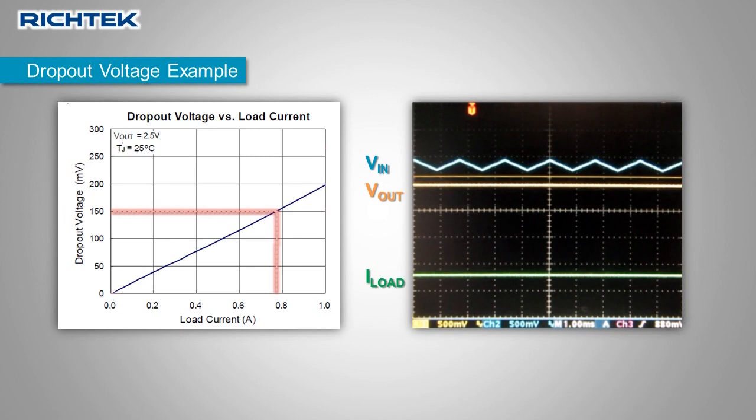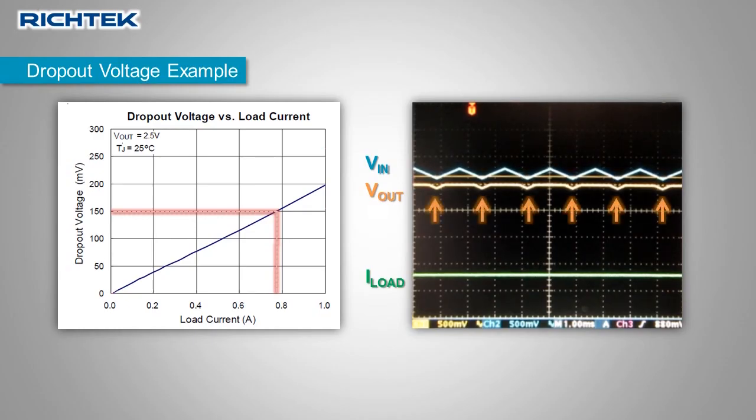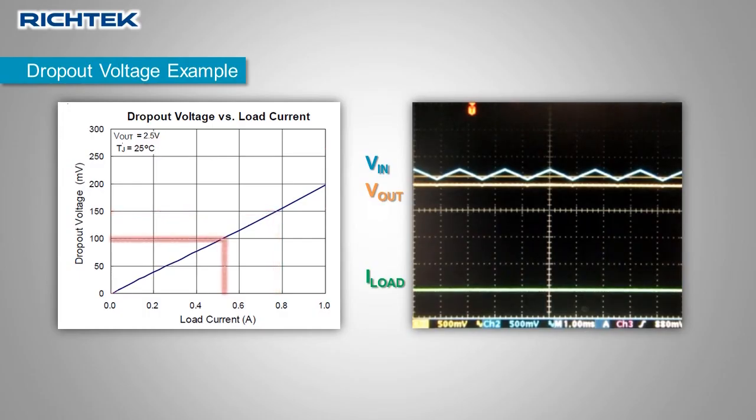So when we reduce the input voltage, you will see that the LDO is no longer able to regulate the output voltage when the input voltage drops below the output voltage plus the dropout voltage. Dropout voltage is related to the load current and the RDS on of the pass MOSFET. So when you lower the load current, there is less voltage drop across the RDS on and then the dropout voltage reduces as well.